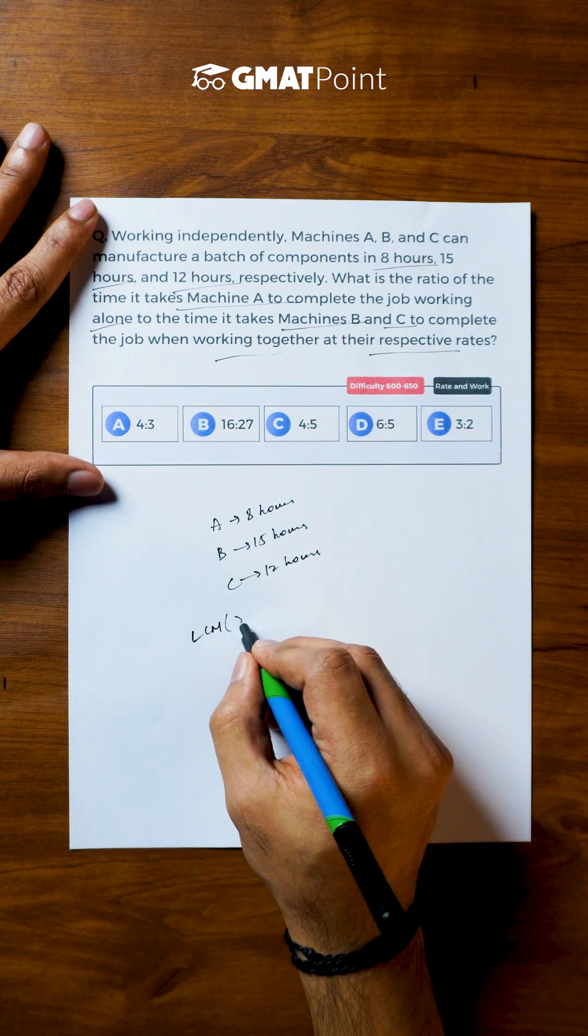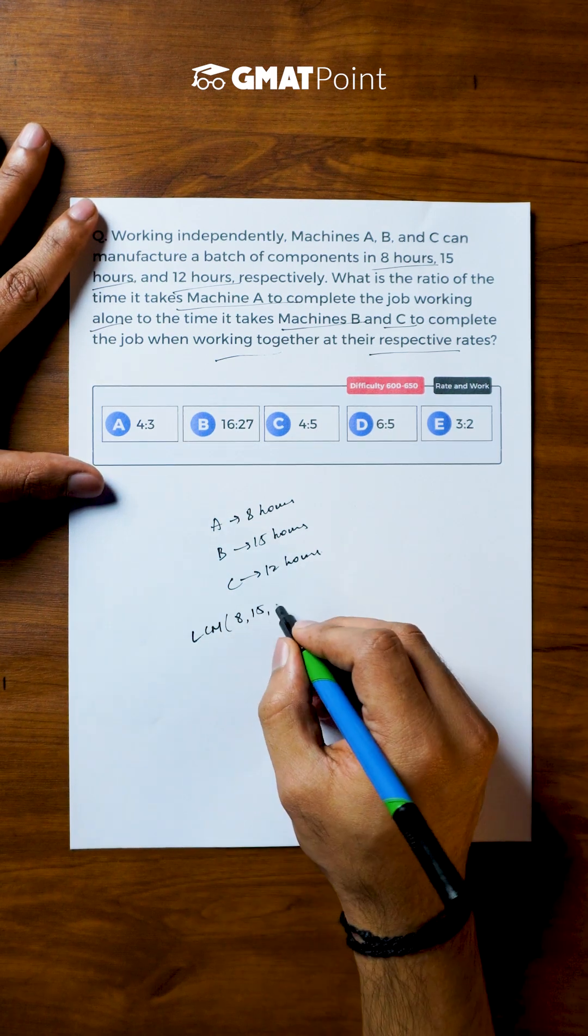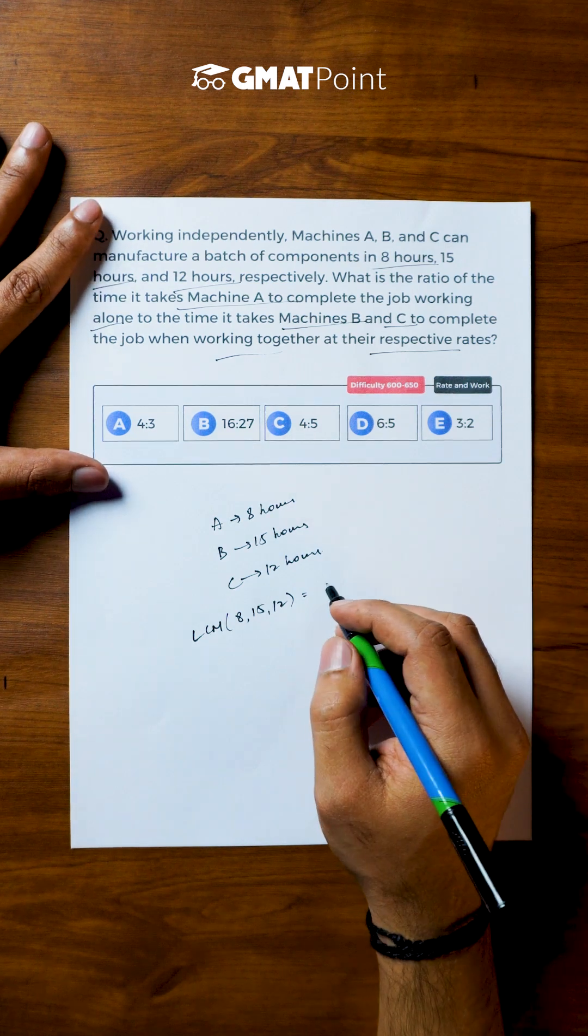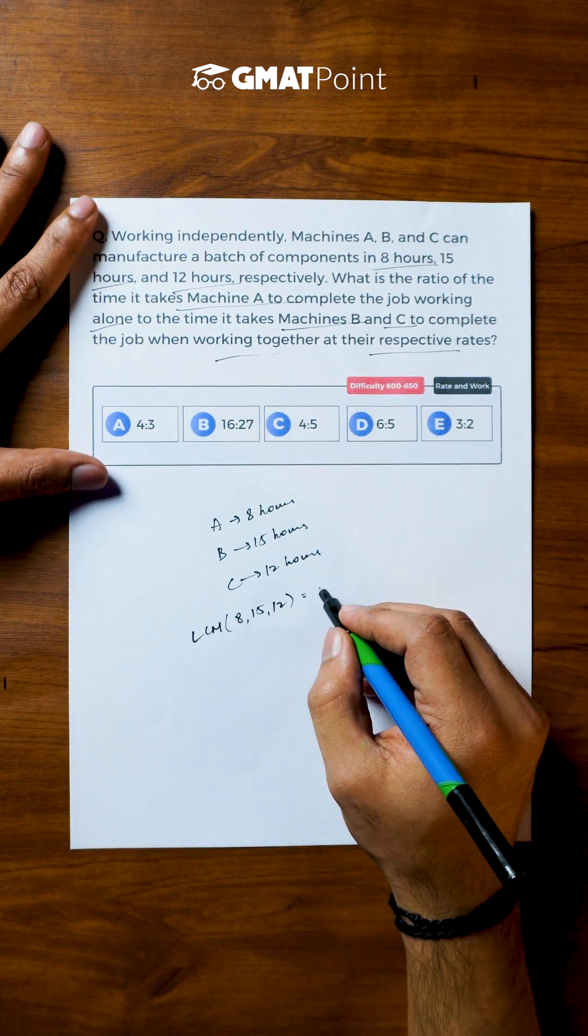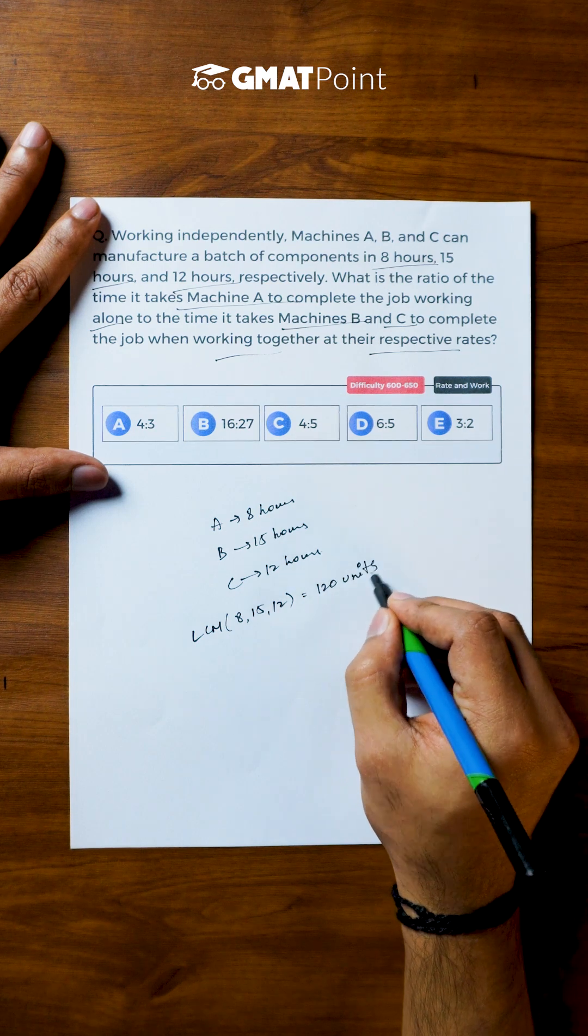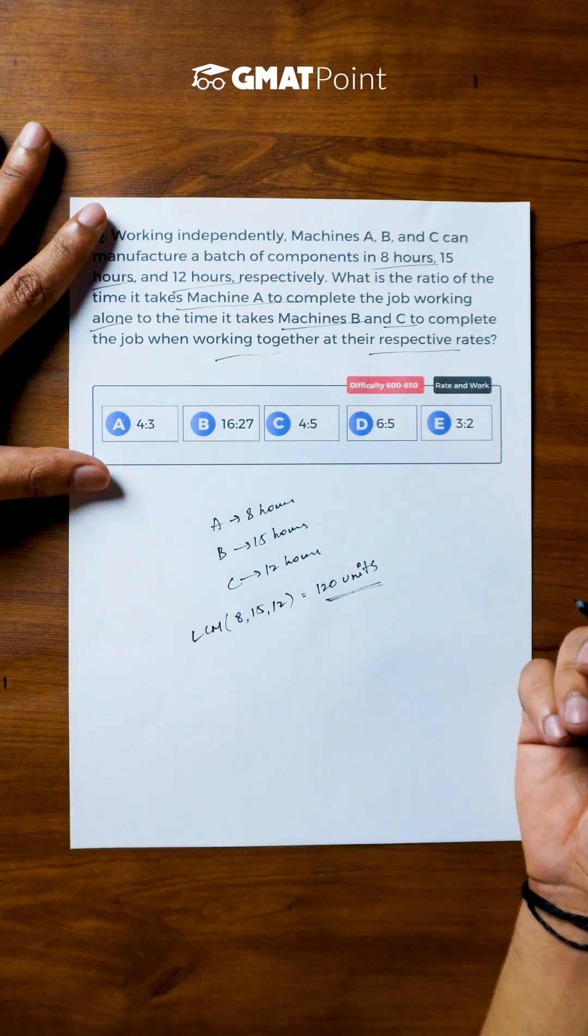Let us take the total number of units of work that needs to be done to be LCM of 8, 15 and 12 for our easy calculations. We get the total number of units of work that needs to be done to be 120 units.